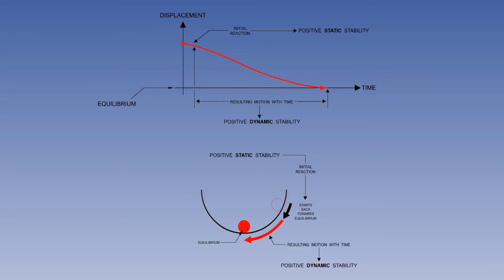How is it possible for the ball to gently return to equilibrium with no oscillations? Damping. If the ball is full of a viscous substance, such as syrup, the ball might act as illustrated.